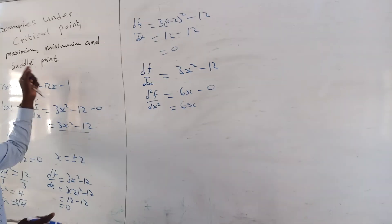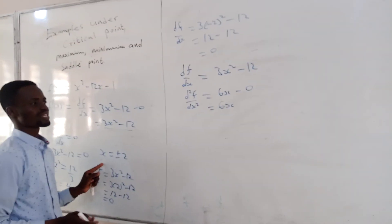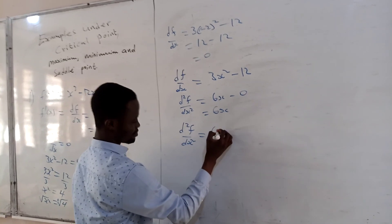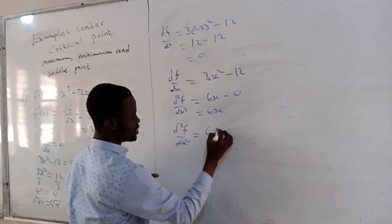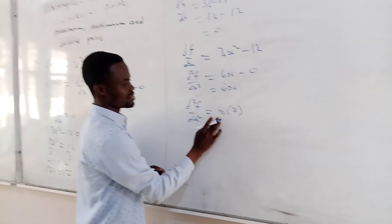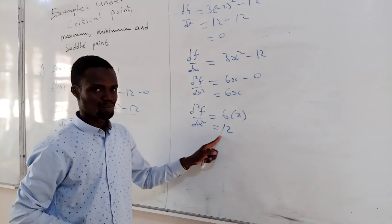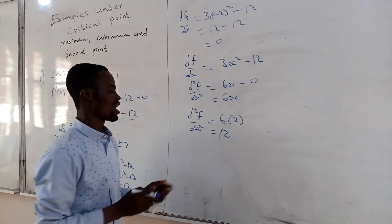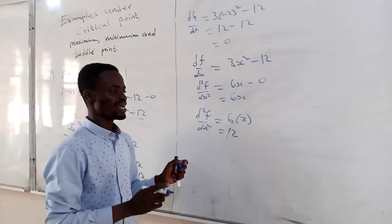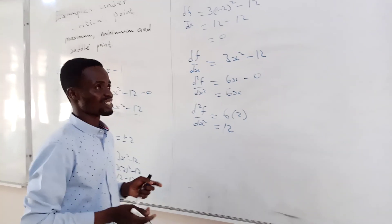After finding the second derivative, you substitute the critical point values. When x = 2: the second derivative gives 6 times 2 equals 12. Since this answer is positive, it means you are at the minimum point. When you get a positive answer, you are at the minimum point. When you get a negative answer, you are at the maximum point.